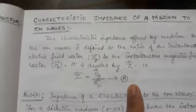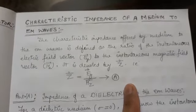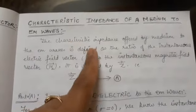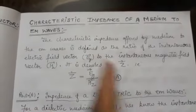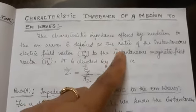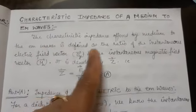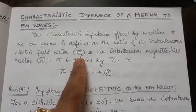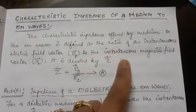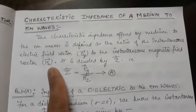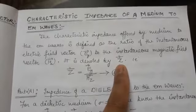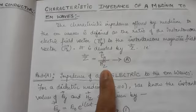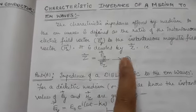We have already defined characteristic impedance in the previous chapter in some other way. In this chapter, the characteristic impedance is defined for electromagnetic waves by different media. The characteristic impedance offered by a medium to the electromagnetic wave is defined as the ratio of the instantaneous electric field vector EY to the instantaneous magnetic field vector HZ. It is denoted by Z: Z = EY / HZ. We will name this equation A.